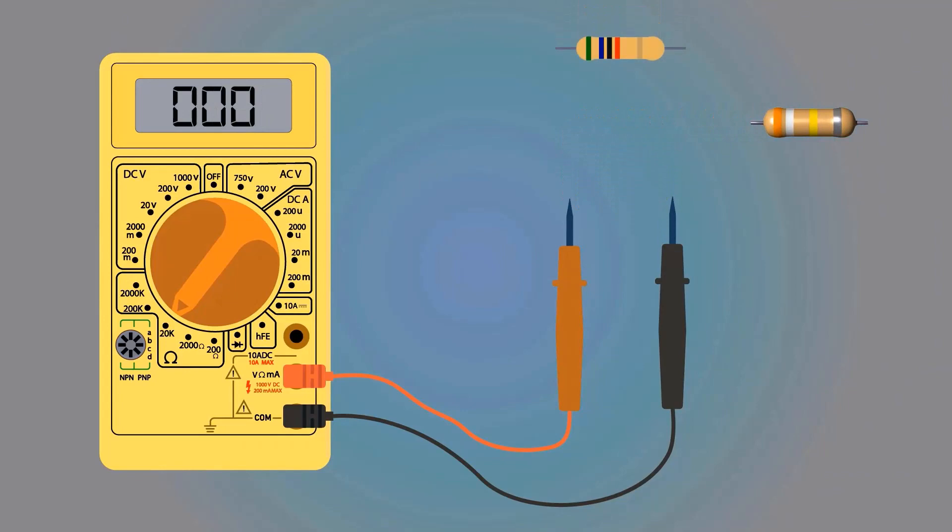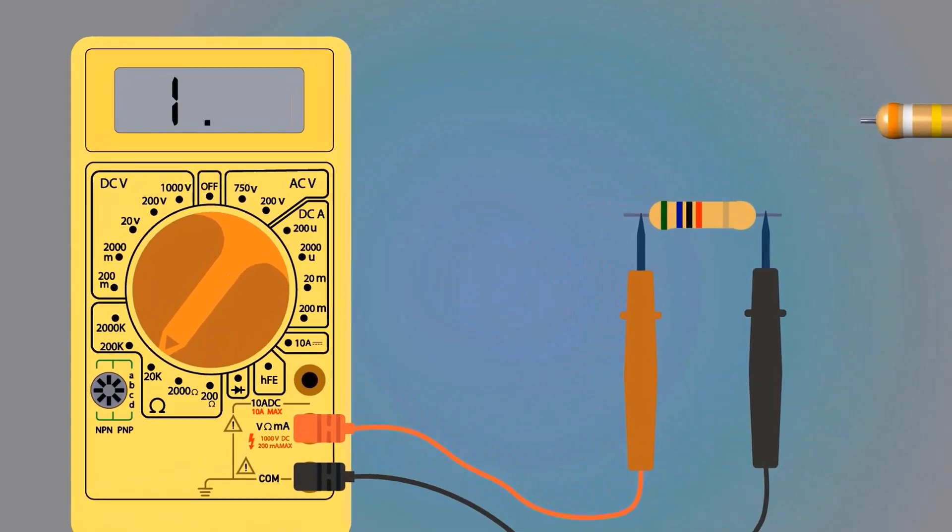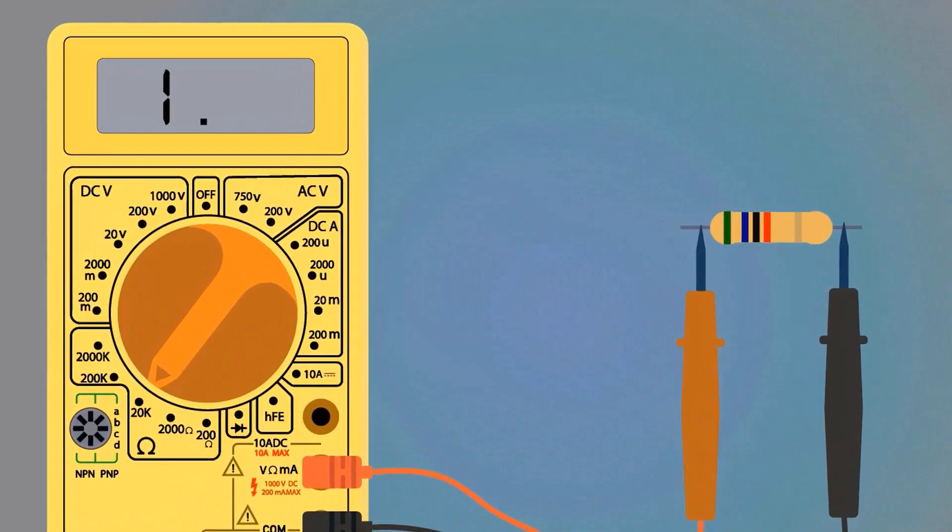Let's take another resistor to measure resistance. When we connect the probes, the display shows 1. This means our resistor value is greater and our selected range is too low.